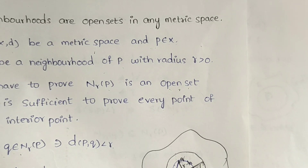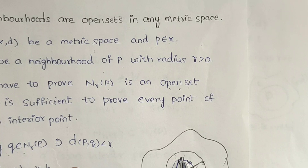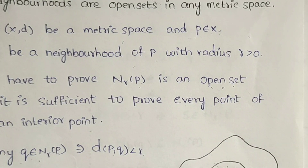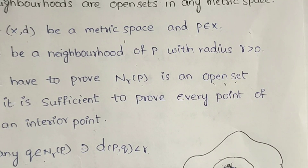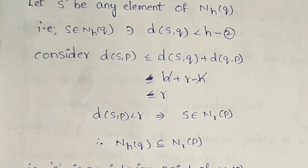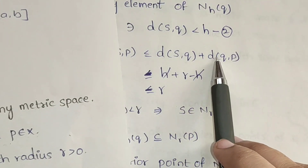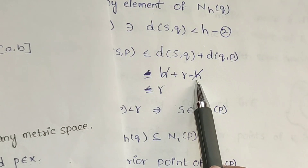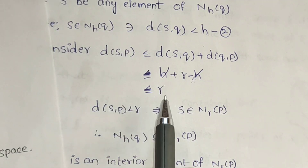Once we have the distance and radius, we place a point. Then q is the interior point. We apply the triangle inequality: distance of s,p is less than or equal to distance of s,q plus distance of q,p. Distance of q,p is less than or equal to r minus h. Plus h — the h terms cancel, leaving r.